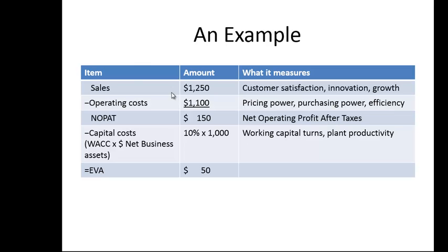Let's take a look at a quick example. We'll assume there are no taxes, and that sales are 1,250. Sales measure things like customer satisfaction, innovation, and growth — that's why people buy your product. Minus the operating costs, which measure things like the pricing power the firm has and whether the firm is able to negotiate lower prices. We get NOPAT of 150 after subtracting that. Now we calculate the dollar cost of capital: assuming a weighted average cost of capital of 10% and net operating assets of 1,000, that's 10% of 1,000, or 100.